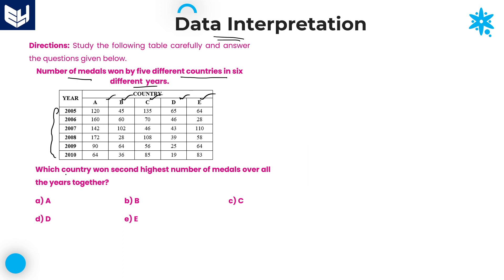The first question is: which country won the second highest number of medals over all the years together? To find the second highest, first and foremost, you need to add all the values for each country. Starting with Country A.